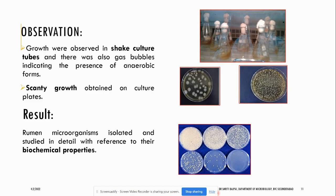The biochemical tests include the indole test, methyl red, Voges-Proskauer, citrate utilization, H2S production test, urease activity, carbohydrate fermentation, sugar fermentation test, and triple sugar iron test. After these tests, we will confirm the organism present in the rumen. This was all about the rumen, its microbiology, and the isolation of different bacteria present in the rumen. Thank you.